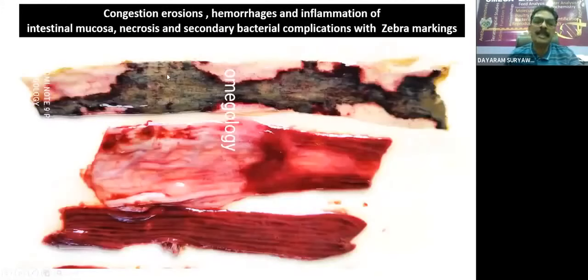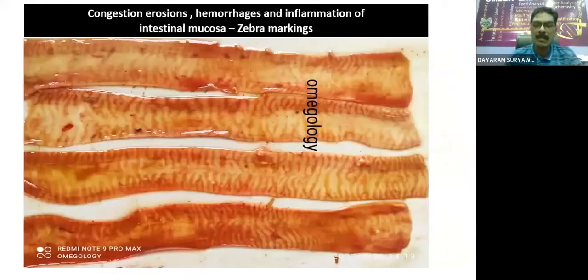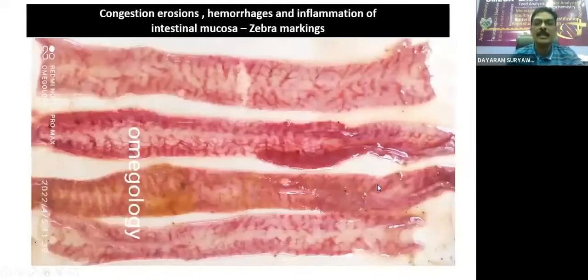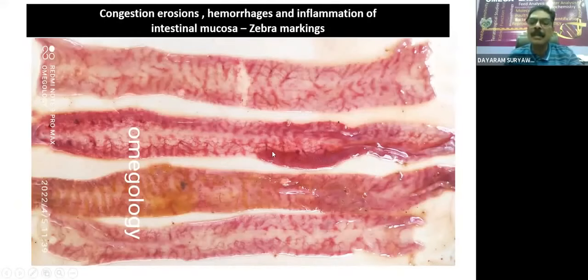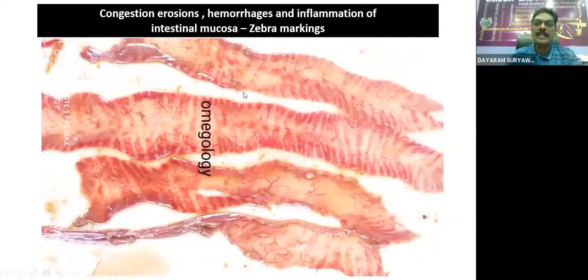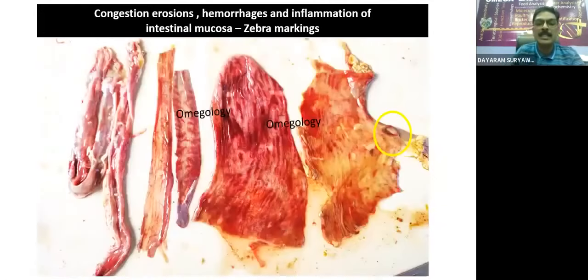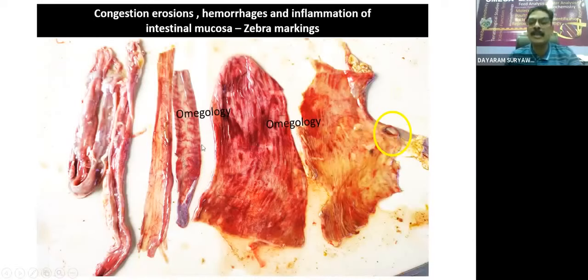Whenever there is a zebra markings presentation, it can be complicated by clostridial-type infections causing extensive necrosis in the mucosa of the intestines. Different portions of the intestines show different types of lesions: horizontal parallel-type erosions in the large intestines, and perpendicular or typical zebra markings in the small intestine. We can also see the Peyer's patches — they are necrosed, inflamed, with edematous accumulation around them. The zebra markings with severe inflammatory reaction and hemorrhage in the mucosa are classically present.